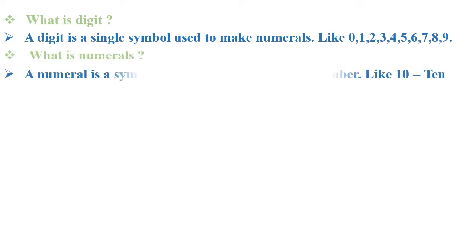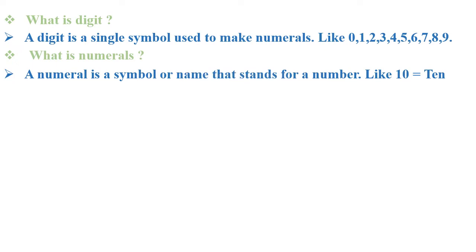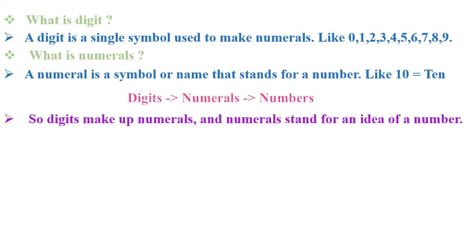What is a numeral? A numeral is a single name that stands for the number. For example, if we are taking 1 and 0 from digits, it becomes the number 10. So 10 — this T-E-N — is 10 in words. If we want to represent this 10 symbolically, then we can draw any symbol 10 times. Numerals come from digits and numbers come from numerals. So digits make up the numerals and numerals stand for an idea of a number.